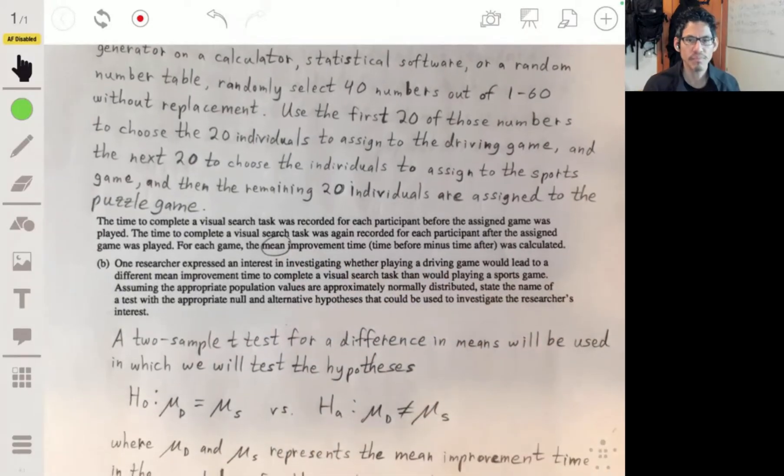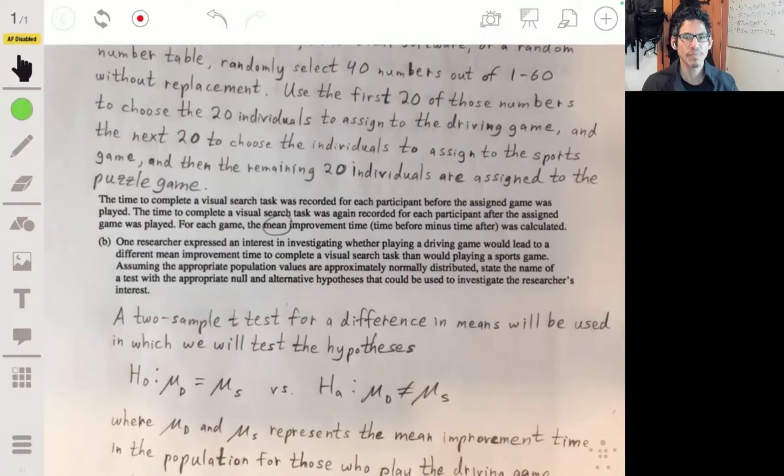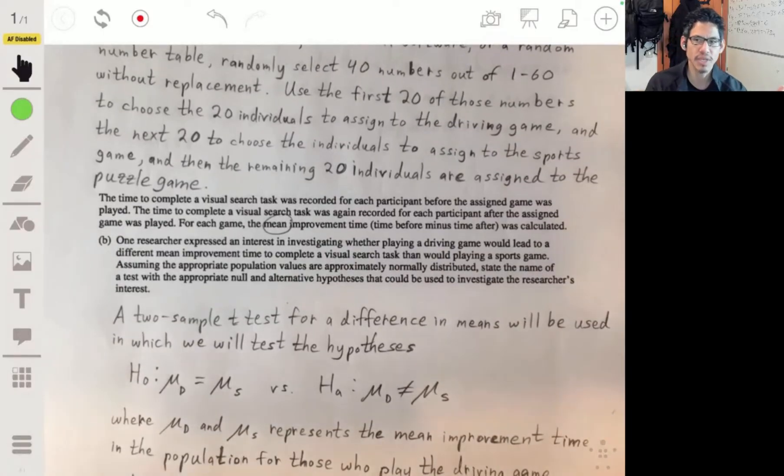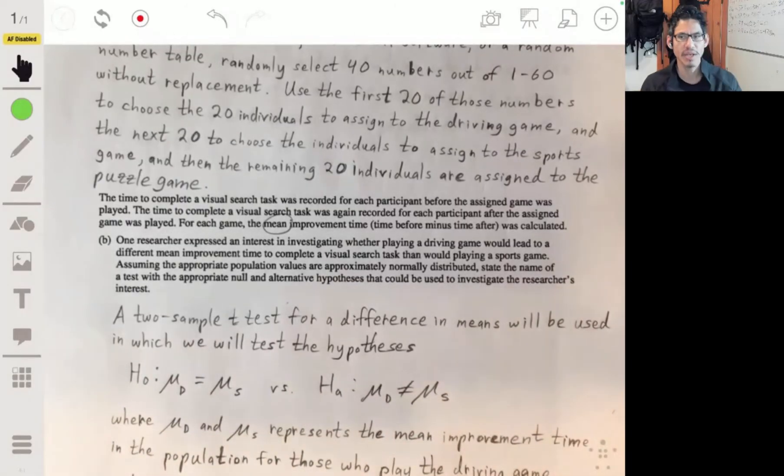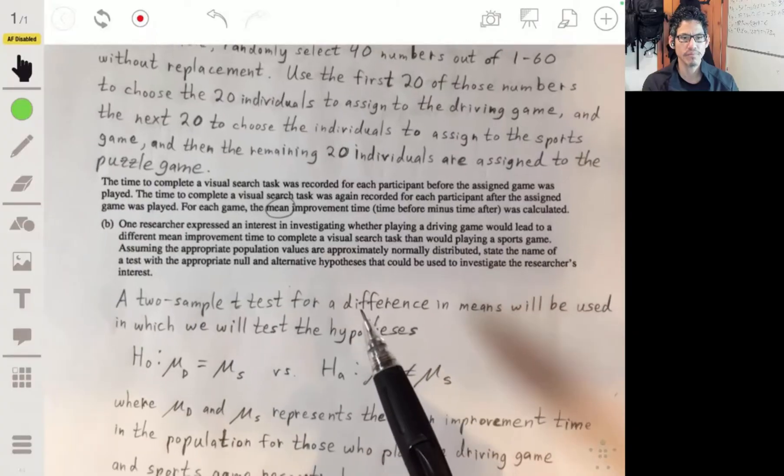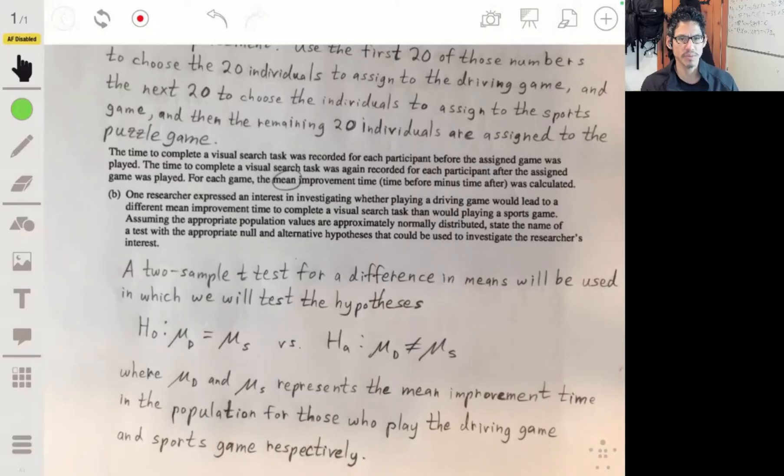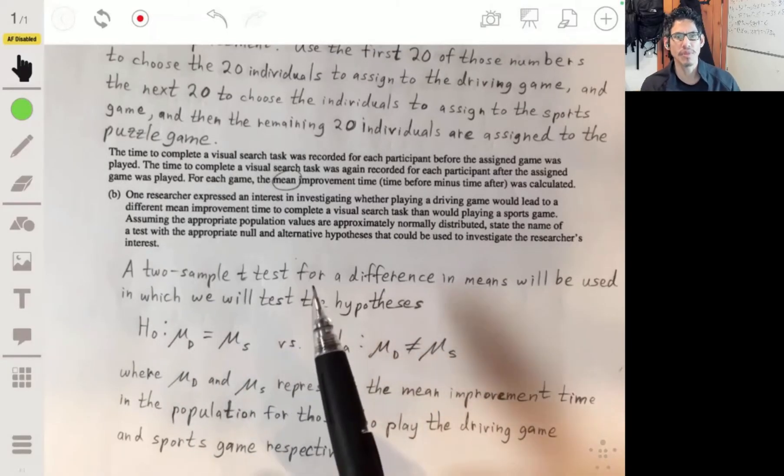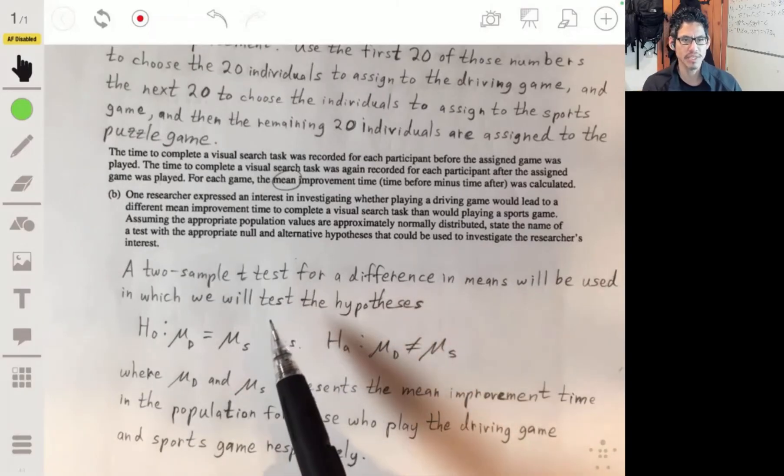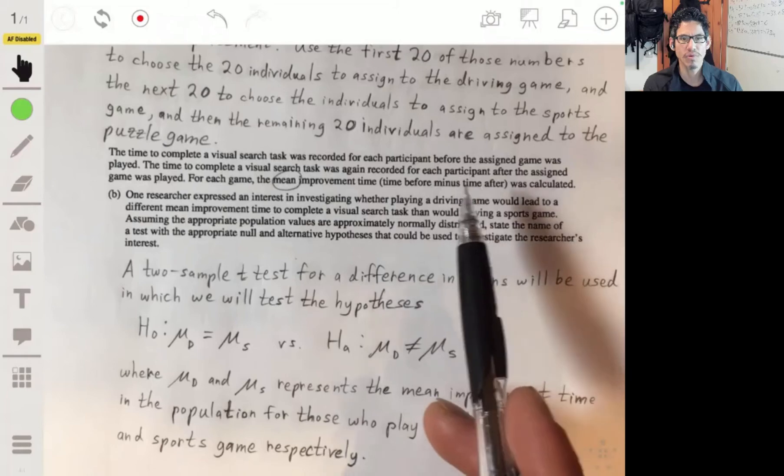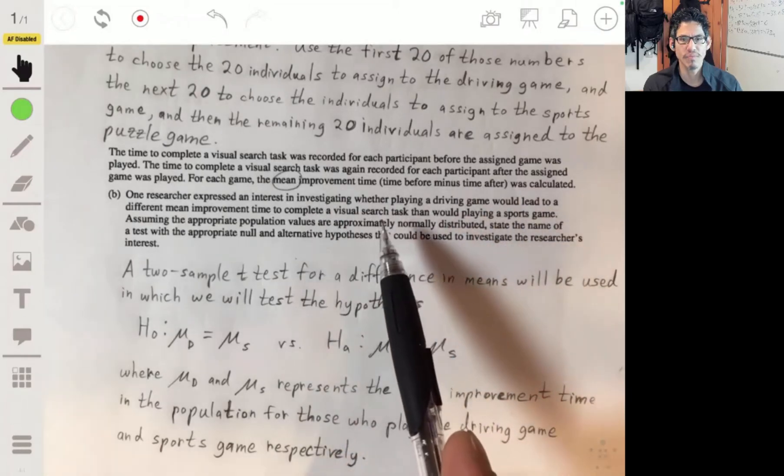And it says pretty clearly right here, the mean improvement time. The two samples would be like the first sample would be the time before they did the, before they played the game. And then the second sample would be after they played their game. The null hypothesis is that there is no difference in the improvement times among the games, meaning that the improvement time, the mean improvement time from a driving game is the same as the mean improvement time from the other game. I just blanked out with the sports game.